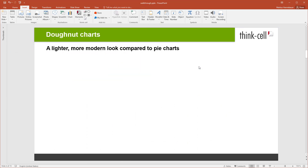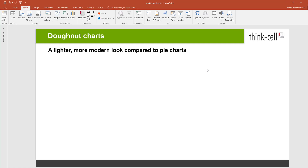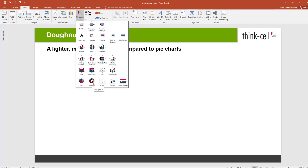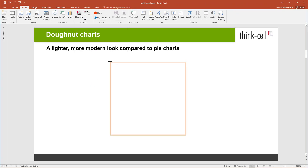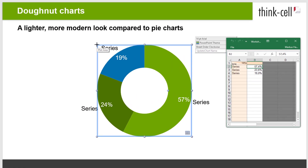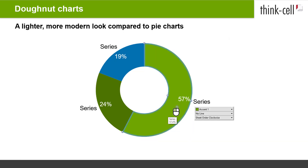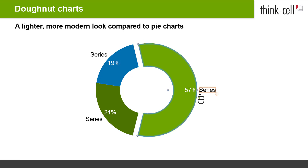Another new feature in ThinkCell 9 is the donut chart. Donut charts are a lighter, more modern alternative to pie charts. You can find the donut chart right next to the pie chart in the Elements menu. When you insert it on the slide, you will see that it behaves just like a traditional pie chart. It has the same datasheet and segments can be rotated or exploded, just as in the pie chart.